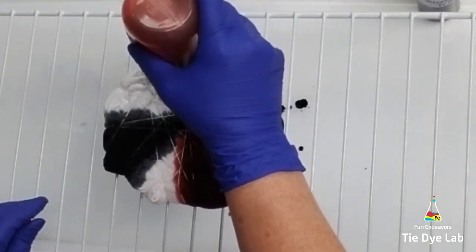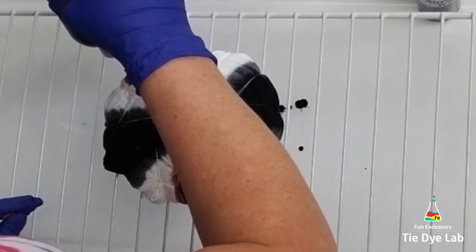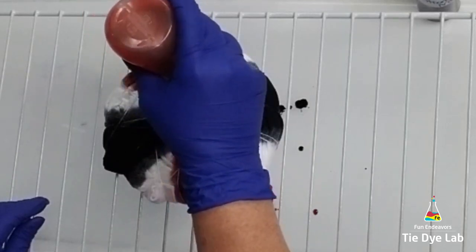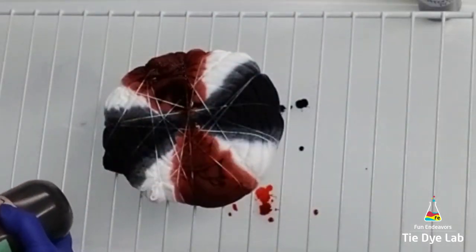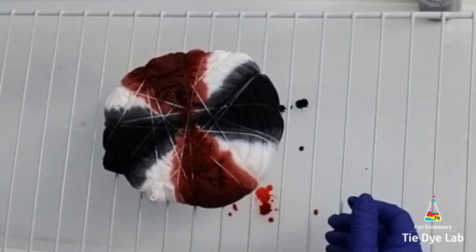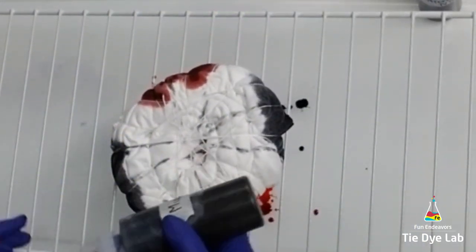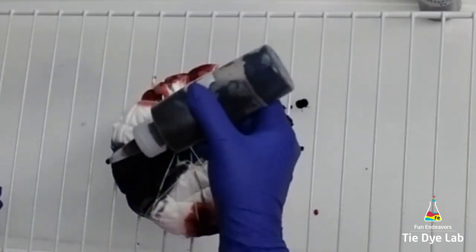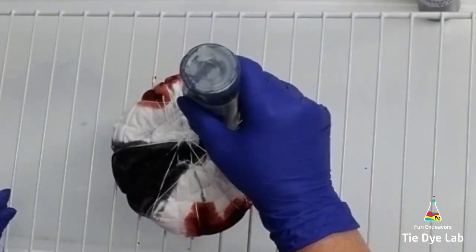That'll leave four sections white. Once I have this side of the shirt done, I'm going to turn it over and do the other side. I'm going to ignore where I drew my lines on the other side and just apply the dye the same way that I did on this first side.